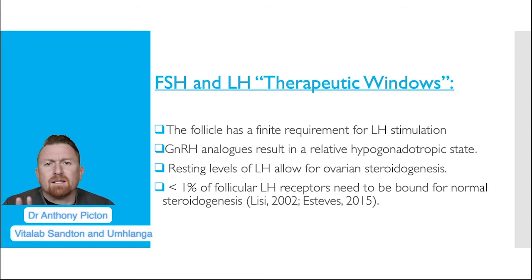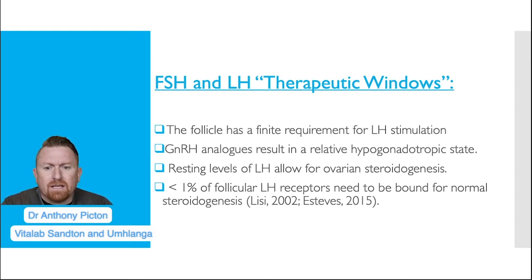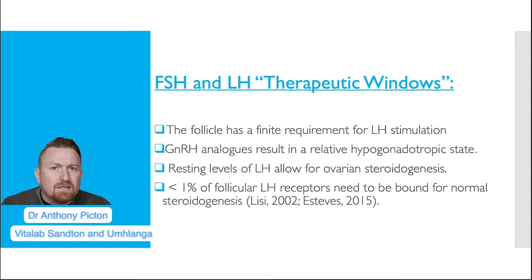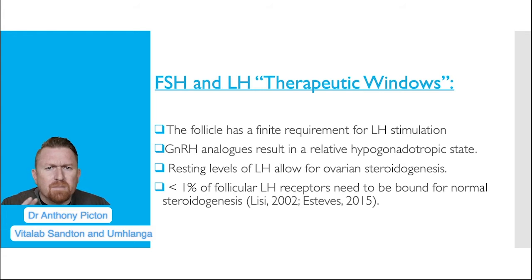We're aware that in a natural cycle FSH works within a threshold or between a threshold and a ceiling — a therapeutic window for follicular recruitment. What's important to realize is that in a stimulation cycle there also seems to be a therapeutic window for LH. We know that LH activity below 75 international units is inefficient in driving ovarian steroidogenesis in hypogonadotropic patients, and if levels go above 225 we start to see a counterintuitive effect with more apoptosis of developing follicles. So we really need to keep LH somewhere between 75 and 225 international units.